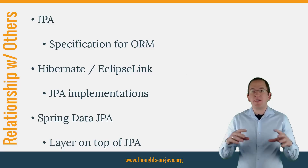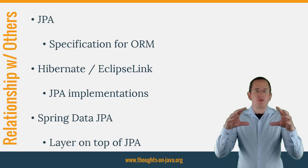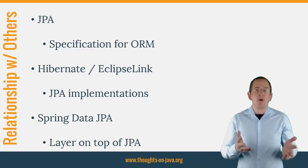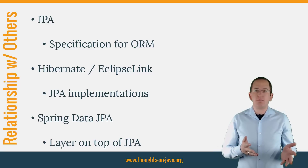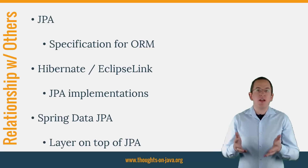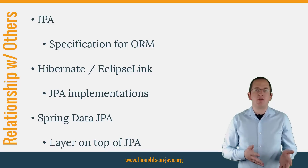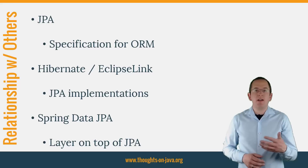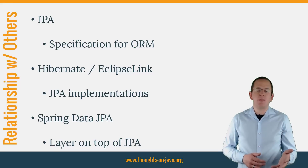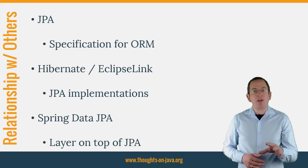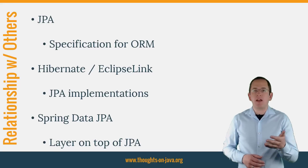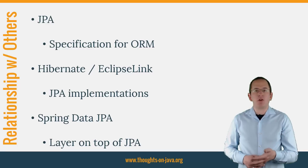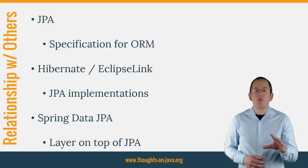Spring Data JPA adds a layer on top of JPA. That means it uses all features defined by the JPA specification, especially the Entity and Association mappings, the Entity Lifecycle management, and JPA's query capabilities. On top of that, Spring Data JPA adds its own features, like a no-code implementation of the repository pattern and the creation of database queries from method names.